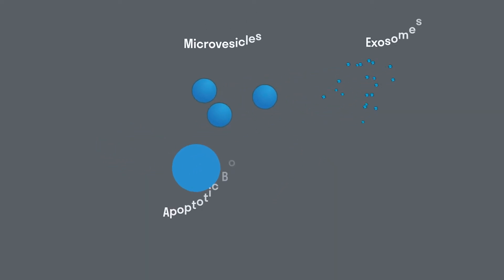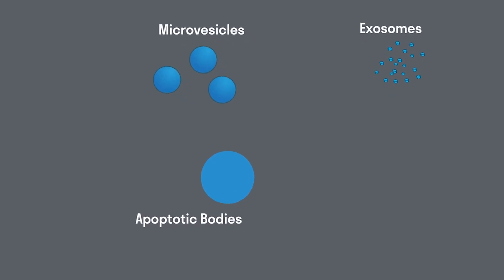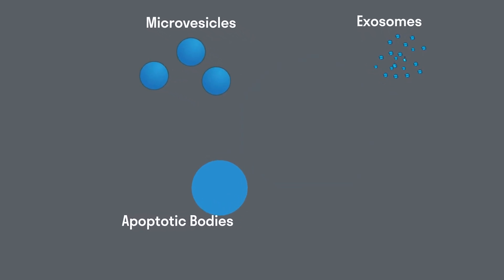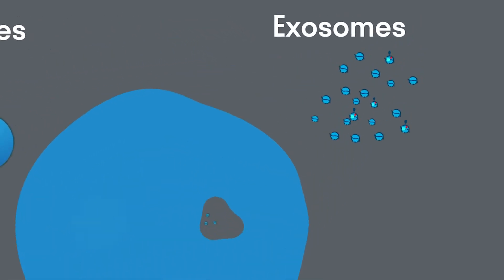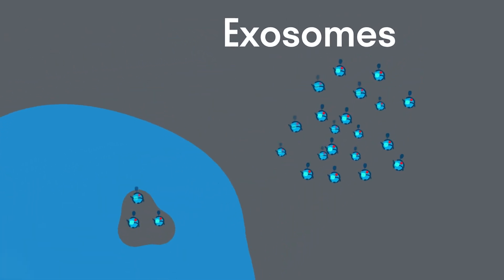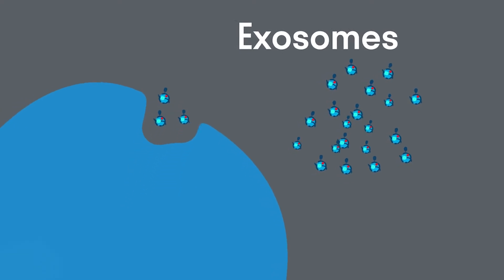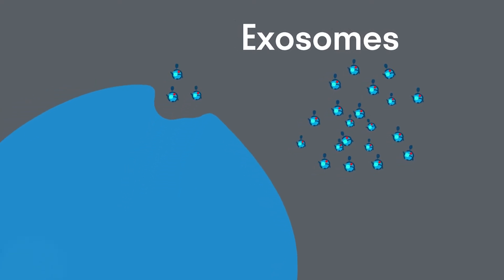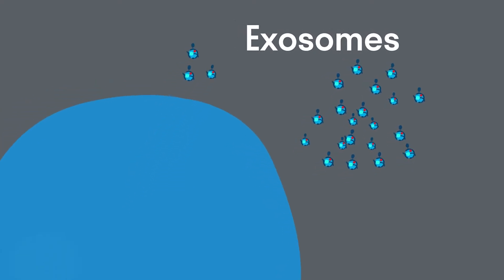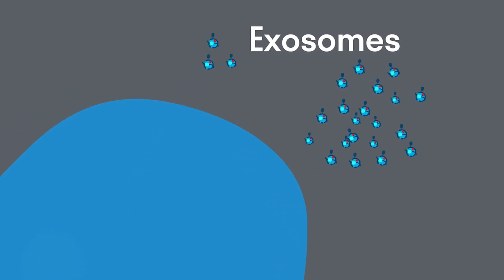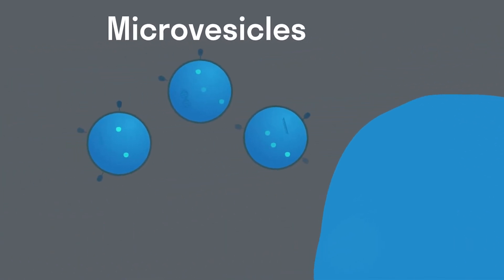Extracellular vesicles, or EVs, are nanoparticles encapsulated by a lipid bilayer that are naturally secreted by cells. Exosomes are smaller vesicles ranging in diameter from 30 to 150 nanometers, formed inside the cell and released via the endosomal pathway.